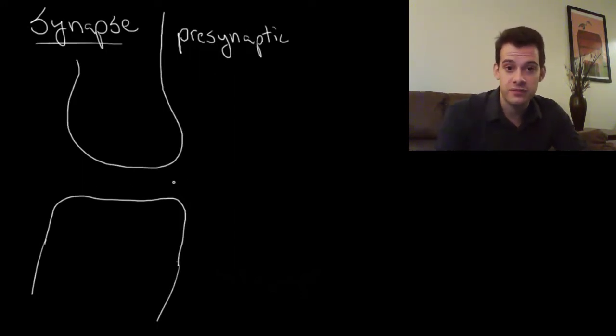Then we have our synapse, which is this gap between the neurons, and then on this side we have the dendrite of the next neuron, which we can now call the post-synaptic neuron. So how do these two neurons communicate?